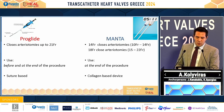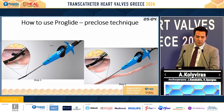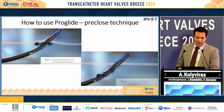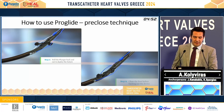The Manta can close arteriotomies up to 22 French, and we use it at the end of the procedure — it's a collagen-based device. A few words about the ProGlide: step one is to open the foot into the vessel; step two, we bring down the needles; step three, we deploy the suture; and step four, we close the foot and bring back the device.